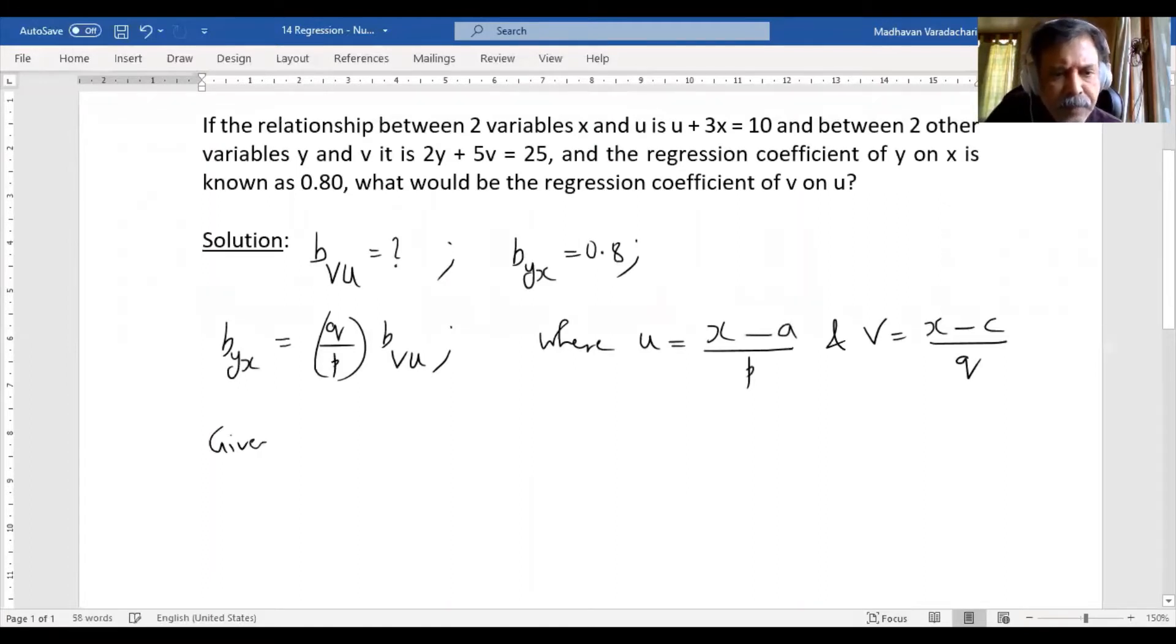Let me write it as u equal to minus 3x plus 10. Here I need x only, so I should take 3 outside. I will have x plus 10 divided by minus 3. I can rewrite this as minus 3 times x minus 10 by 3.